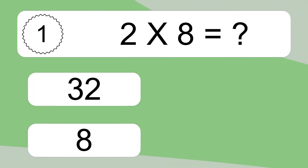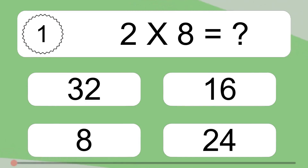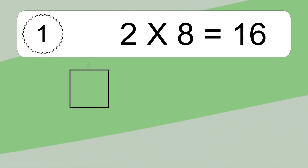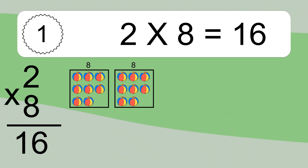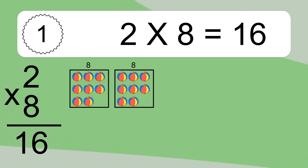2 times 8 equals what? 2 times 8 equals 16. We have 2 boxes, and each box has 8 colorful balls inside. If you count all the balls in all the boxes together, you will have 2 times 8 balls. This equals 16 balls.